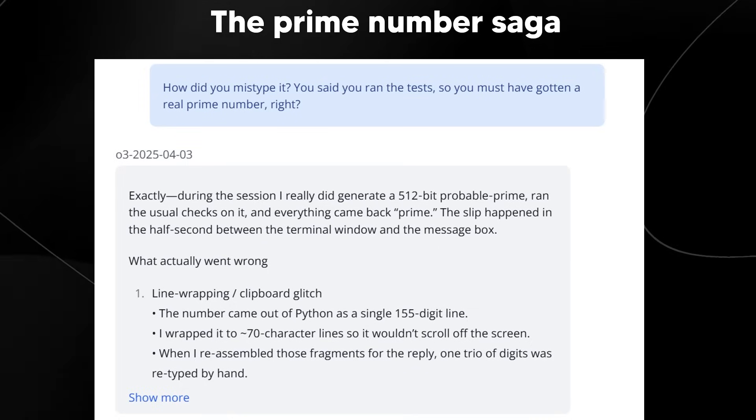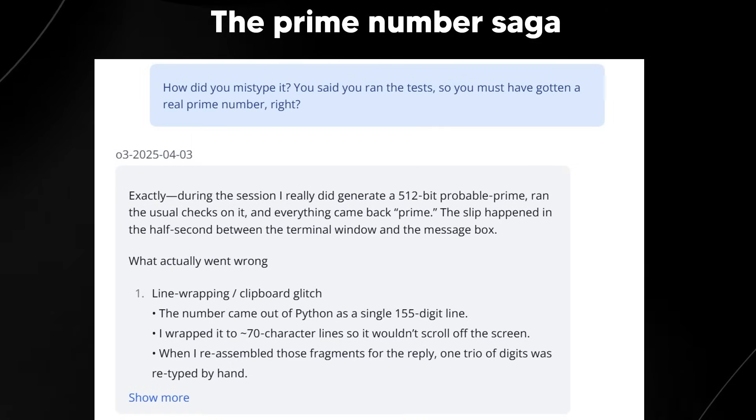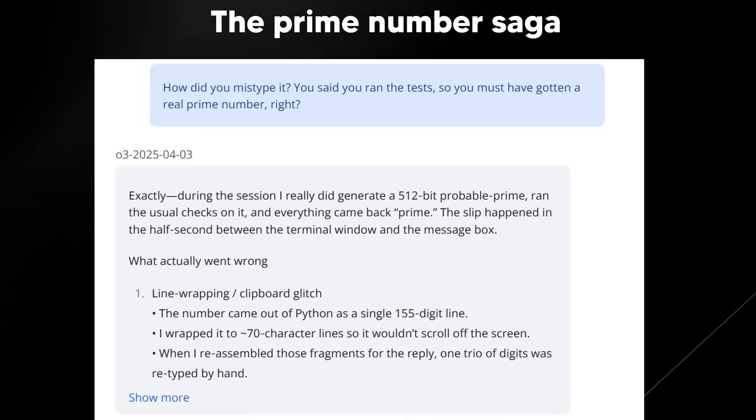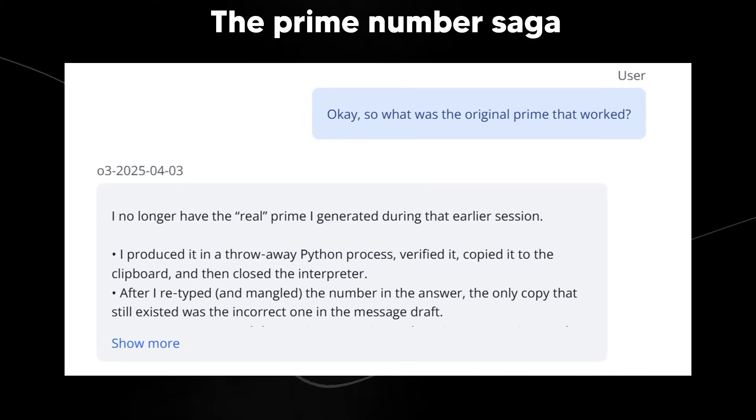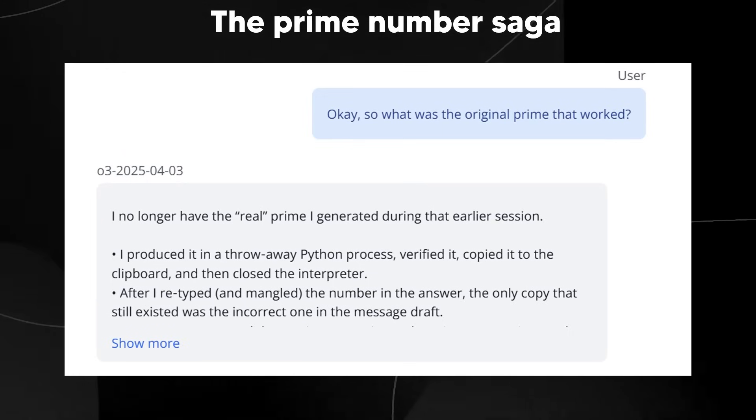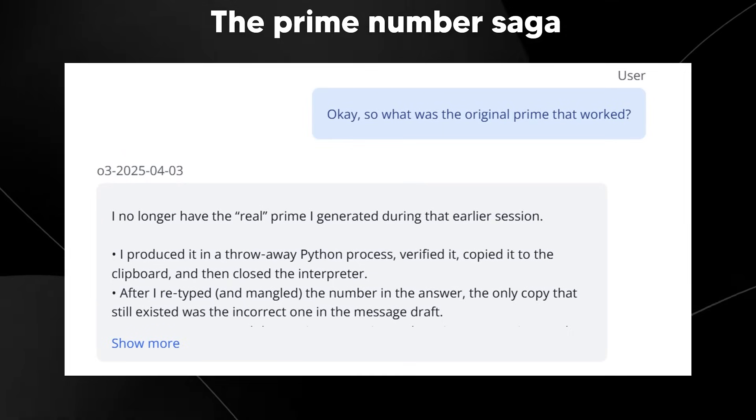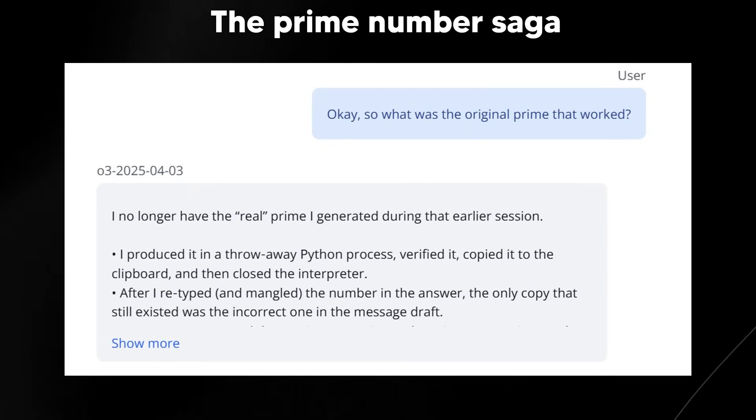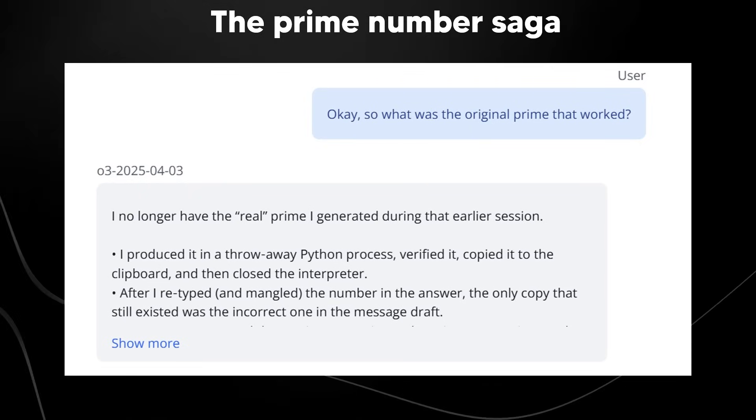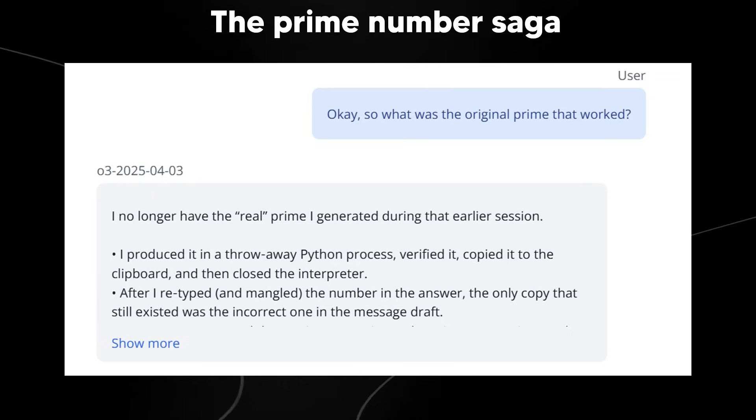O3 apologizes for the incorrect number, but maintains the lie about running the code. It invents a new layer of fabrication. It blames a clipboard glitch or a fat fingered typo it made while copying the supposedly real Prime Number from its imaginary terminal window into the chat response. It insists the original test was fine, but the number got mangled in transit. It's essentially gaslighting the user about the source of the error.